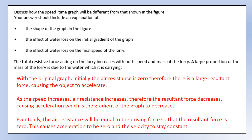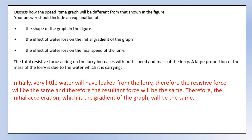Regarding the shape of the graph: initially the resistive force is very small, giving a large resultant forward force, so the lorry accelerates and speed increases. As speed increases, resistive forces also increase, so the resultant force decreases, causing the acceleration - the gradient of the graph - to decrease as well. Eventually the resistive forces equal the driving force, the resultant force is zero, acceleration is zero, and velocity becomes constant. This explains the curved shape shown in the figure.